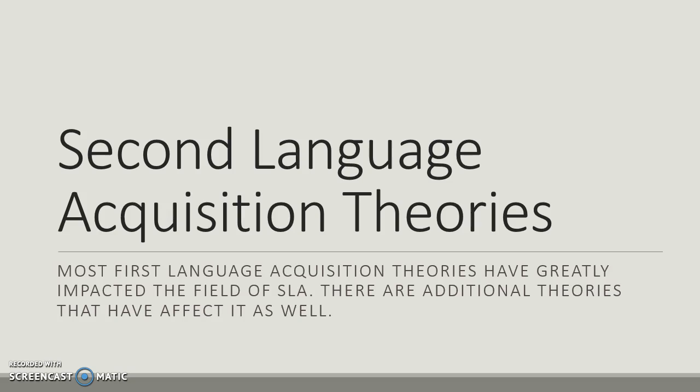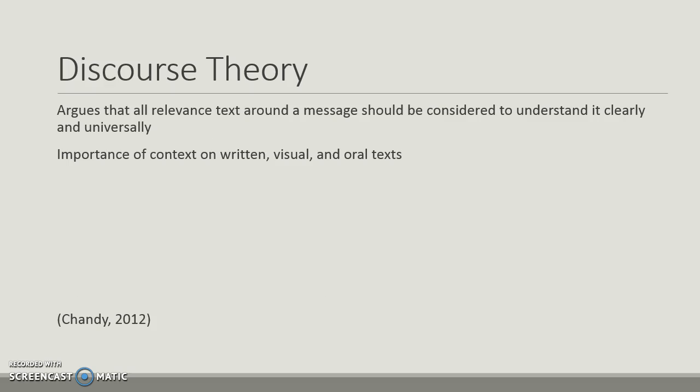Those were first language theories, and they've greatly impacted the field of SLA — second language acquisition. But there are additional theories in SLA as well. Discourse theory argues that all relevant context around a message should be considered in order to understand it clearly and universally. This connects to the importance of context on visual, written, and oral texts that we need to scaffold for students prior to their being able to understand it.